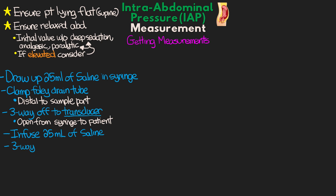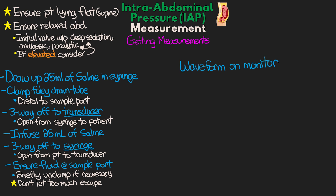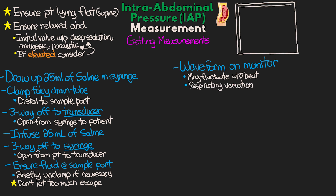Then turn the stopcock to be off to the syringe, allowing open communication from the patient to the transducer. Ensure that we have fluid collected at that sampling port — you may need to briefly unclamp the drainage tubing to get the fluid to flow down, but be careful not to let too much fluid escape. Now we're going to begin to see a waveform on the monitor. This waveform may have fluctuations with each heartbeat and will show large variations with each breath, because as the lungs expand and the thoracic cavity expands, they exert pressure down on the abdominal compartment.